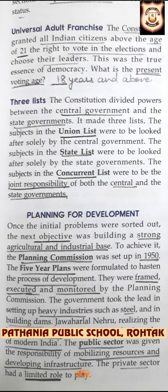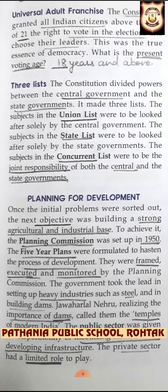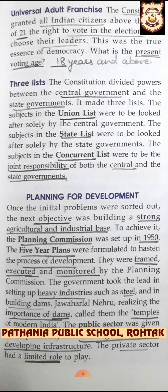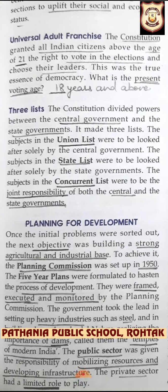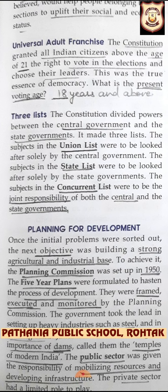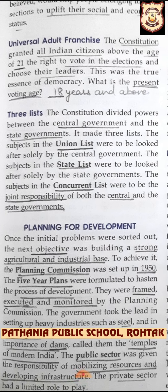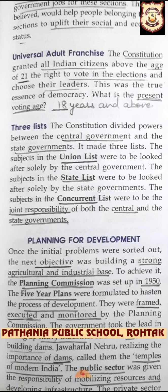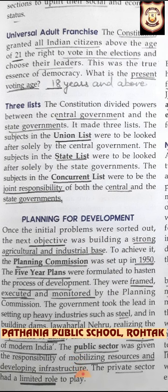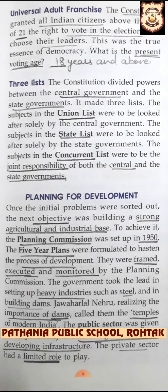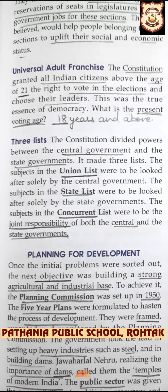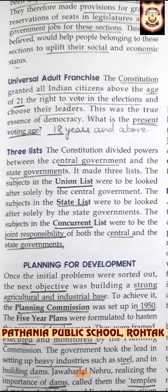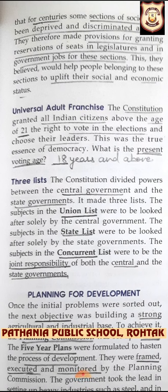The last feature is the three lists. The constitution divided powers between the central government and state governments into three lists: the Union List, the State List, and the Concurrent List. Subjects in the Union List are looked after solely by the central government, subjects in the State List by state governments, and subjects in the Concurrent List are the joint responsibility of both.